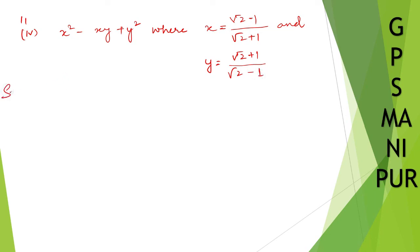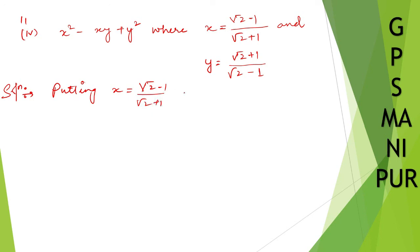Now, solution. We have x squared minus x y plus y squared, and we know x and y. Putting x equal to (√2 minus 1) divided by (√2 plus 1), and y equal to (√2 plus 1) divided by (√2 minus 1) into the given equation.